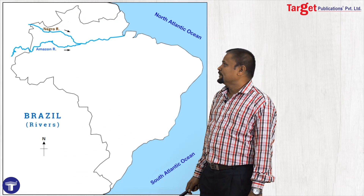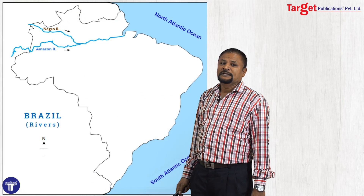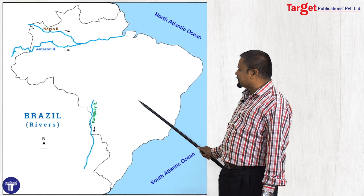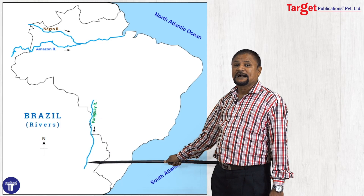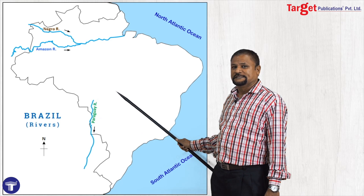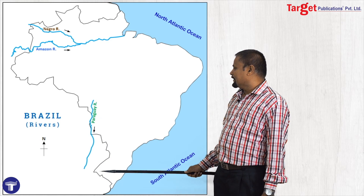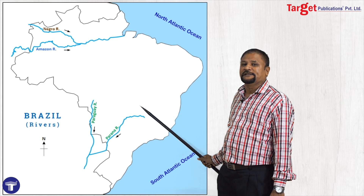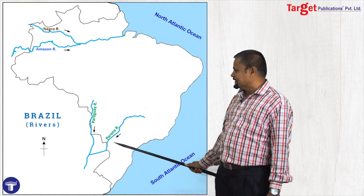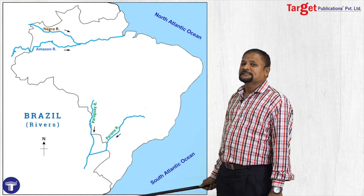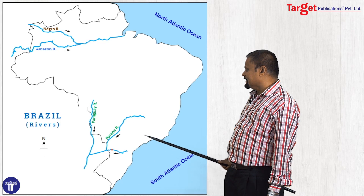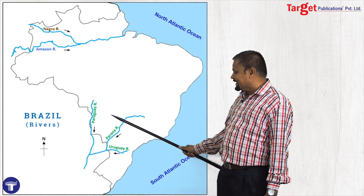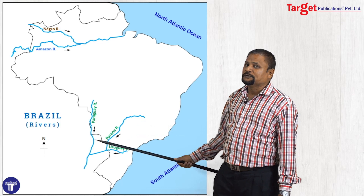Confluence, you know, is the meeting point of two rivers. The second important river system is Paraguay River. It is originating from the southern part of the Brazilian Highland and flows towards south, entering Argentina. The important tributary of Paraguay is Parana River. Parana River is also originating from the southern part of Brazilian Highland and joins Paraguay River in Argentina. Another small tributary is Uruguay River, originating from the southern part of Brazil and slowly joining with Paraguay River. So these three rivers are originating from Brazil but going to a foreign country.